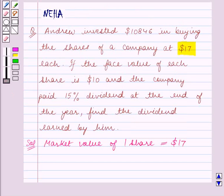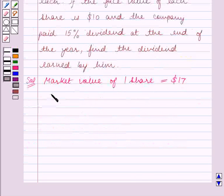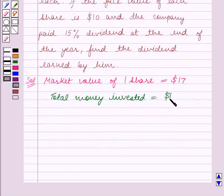Also we are given that total money invested by Andrew is $10,846. So total money invested is equal to $10,846.